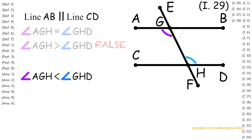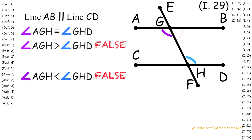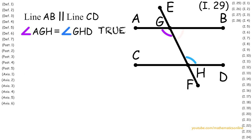In the same way, we can also prove that the statement angle AGH is less than angle GHD is also false. Now since we have proven two statements false, the remaining statement must be true: angle AGH is congruent to angle GHD.